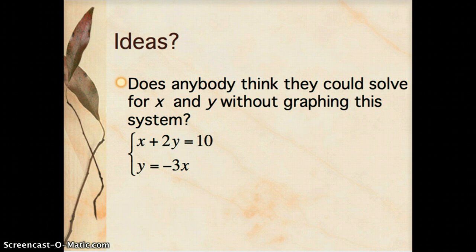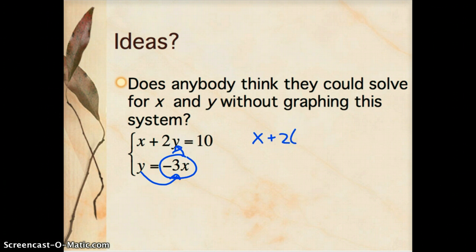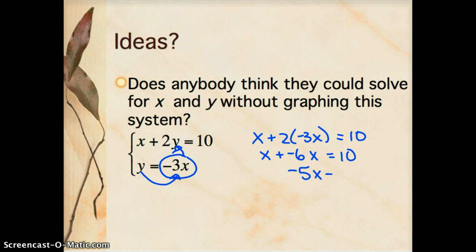I know that x plus 2y equals 10, and I know that y equals negative 3x. Because I know that y equals negative 3x, I'm going to substitute negative 3x in for y in the first equation, since y and negative 3x are the exact same thing. So what I'm going to say is x plus 2 times negative 3x must equal 10. This looks like x plus negative 6x equals 10.